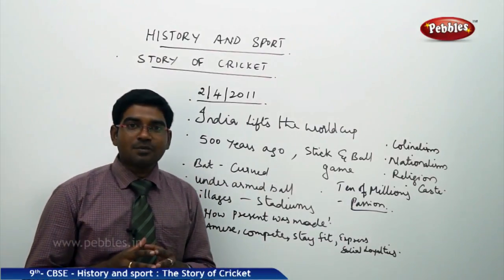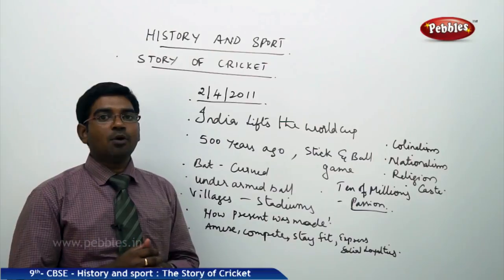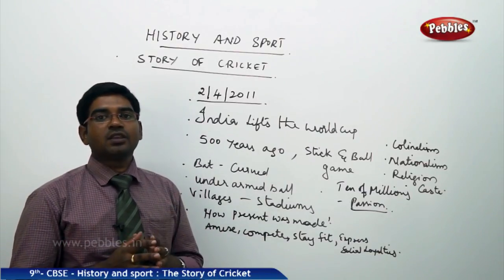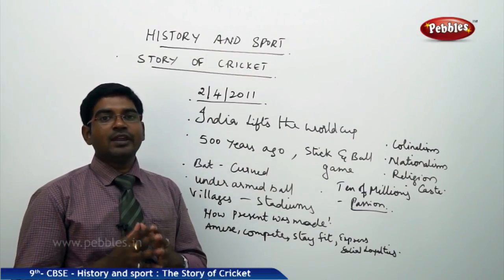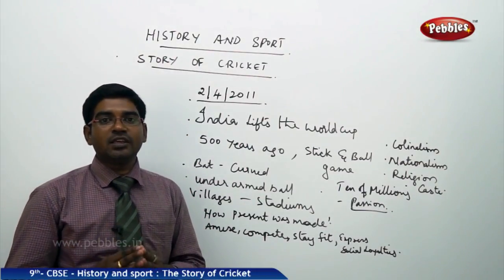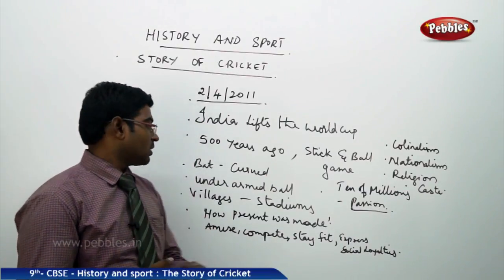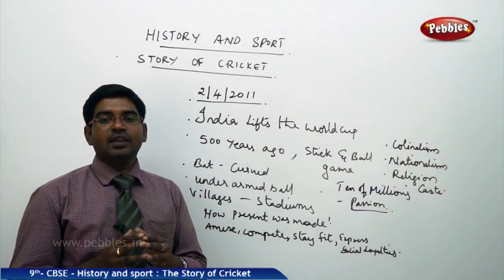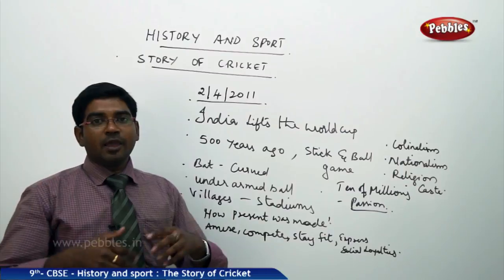Here we will also study how the bat first looked. The bat was first curved at the end because earlier the bowling used to be done underarm, and the batsman got a chance to connect with the curved shape of the hockey-bat-like stick. Later on, this got reshaped. We also study how the game, initially played in villages, today is played in giant stadiums in big cities, and how the present was shaped by history.